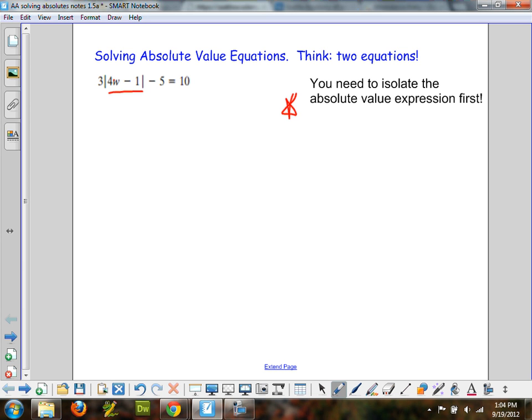As I say right here, we want to isolate the absolute value expression first. So, if you focus on just this absolute value expression, we are going to undo the minus 5, and we are going to undo the times 3 first to get it down to the absolute value expression by itself.